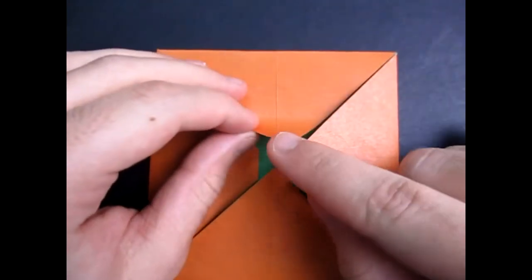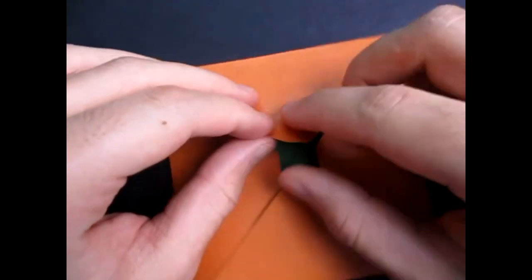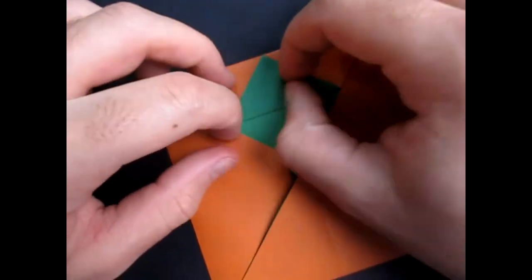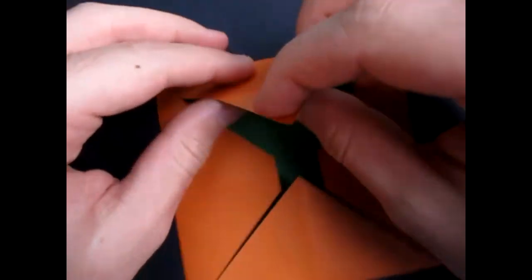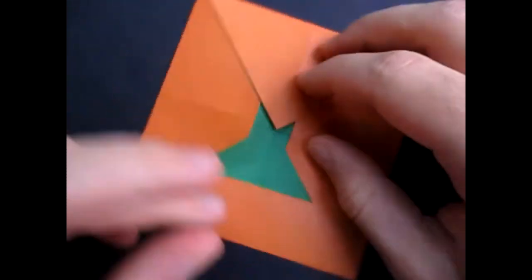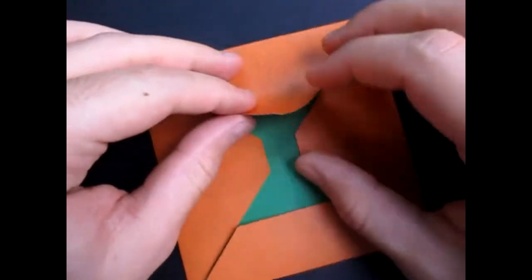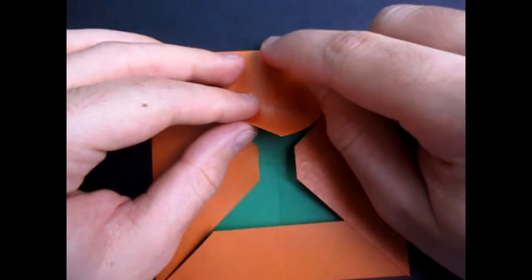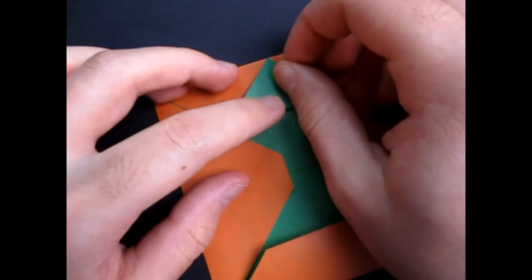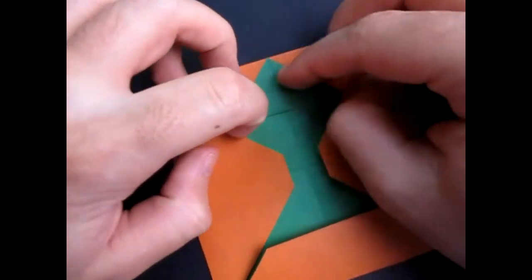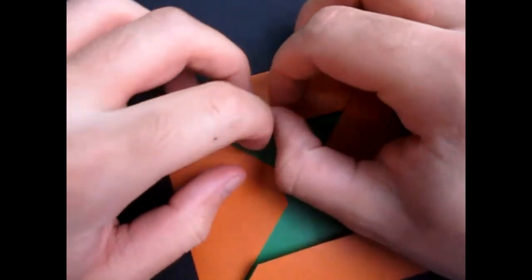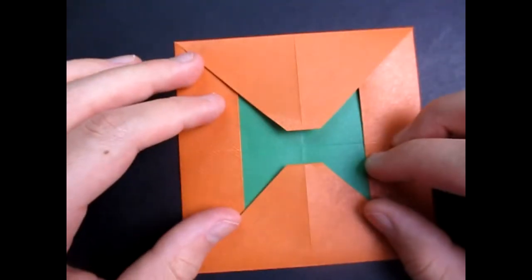Okay, now take this point and fold it to this point. And unfold and fold it inside. Like that. And repeat on this side. So take this point and fold it to here, where the crease is the edge. Crease sharply and fold it behind it. Like that. And look, you have a bowtie.